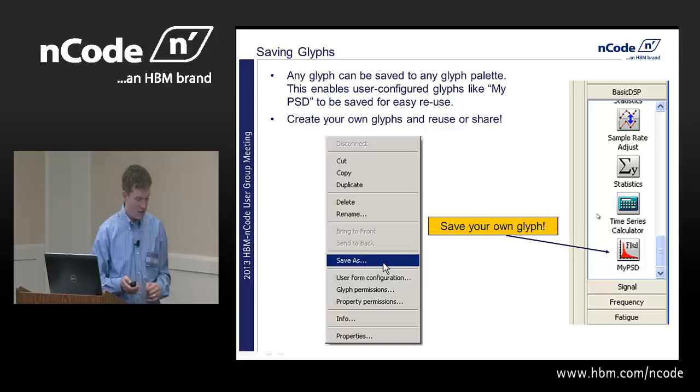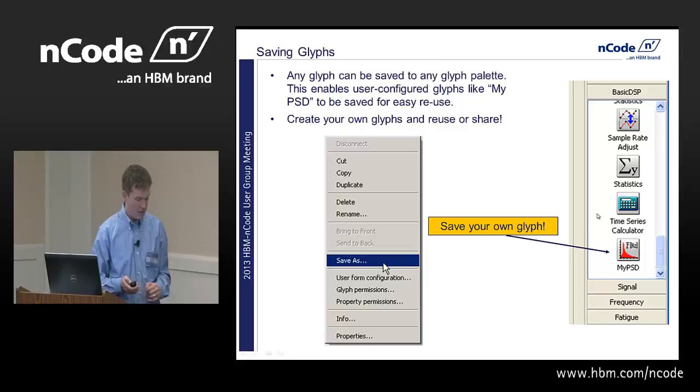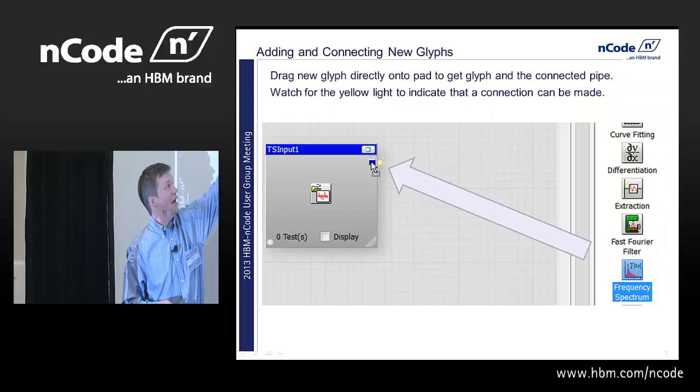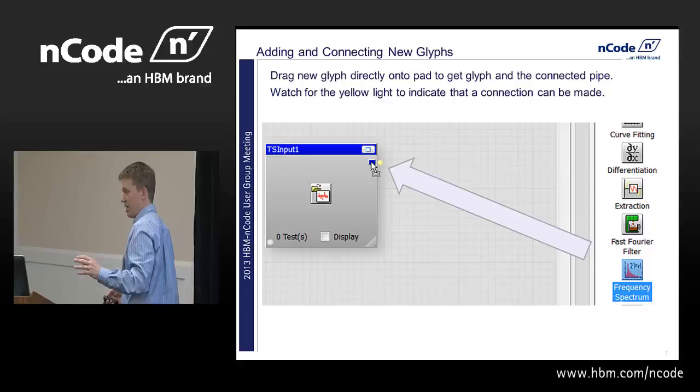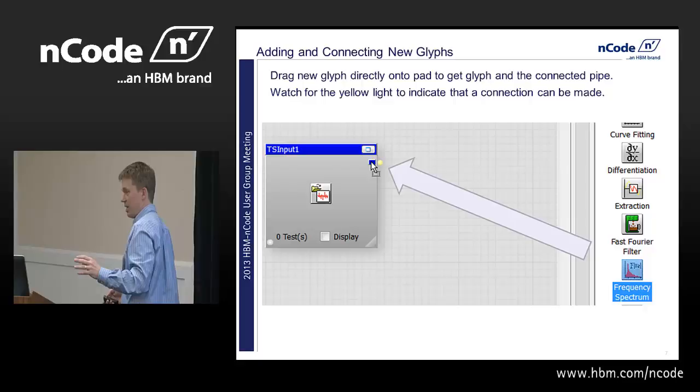How to connect Glyphs. If you drag a Glyph directly from the Glyph palette onto a pad, you get the Glyph and its connection automatically. If you drag it anywhere else and drop it, you'll have to connect it yourself. So you can save yourself an entire mouse click by dragging onto a pad instead of dragging onto the workspace. Every once in a while someone says 'I didn't think you could do that' — and they've been using Glyphworks for 10 years.